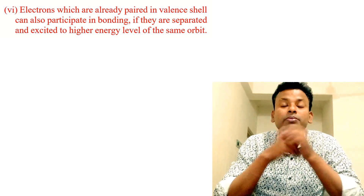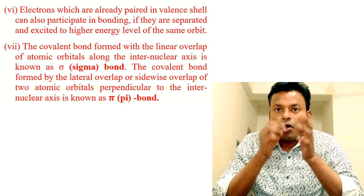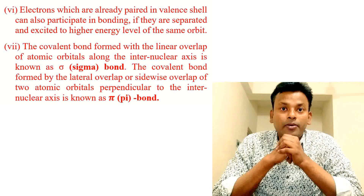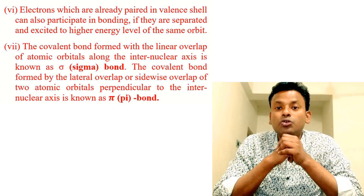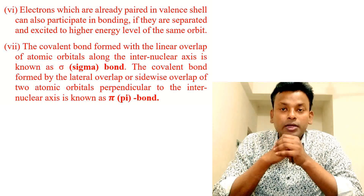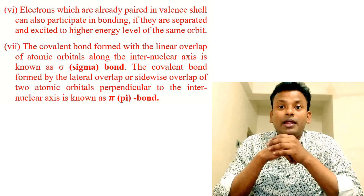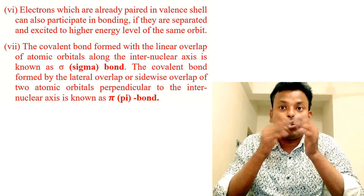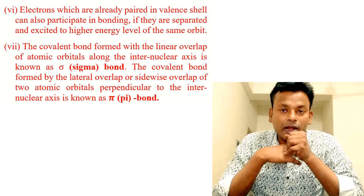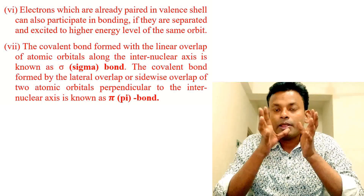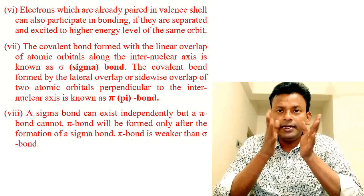Point seven: the covalent bond formed with linear overlap of atomic orbitals along the internuclear axis is known as a sigma bond. The covalent bond formed by the lateral overlap or sidewise overlap of two atomic orbitals perpendicular to the internuclear axis is known as a pi bond.